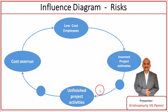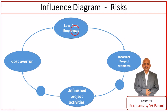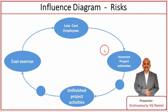It is a chain — low-cost employees producing incorrect project estimates, leading to unfinished project activities, leading to cost overrun, and again you want to position low-cost employees on the project. The moment you see all these risks in a diagrammatic, graphical way, you know what is coming first, what is the cause, what is the effect, how the cause and effect are interrelated, and how they are contributing to the overall project outcomes.